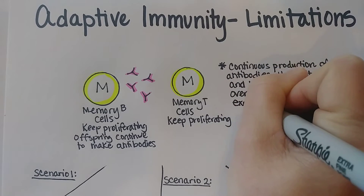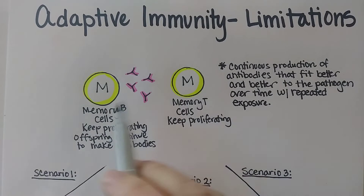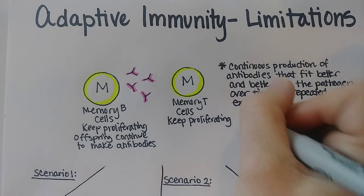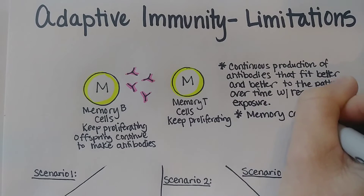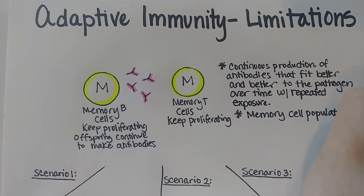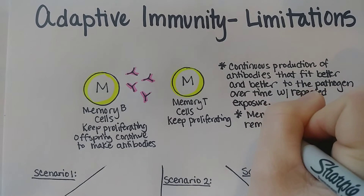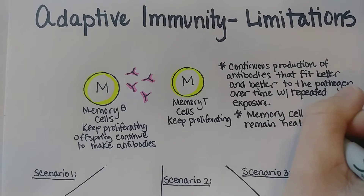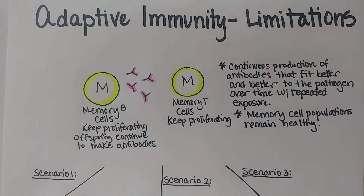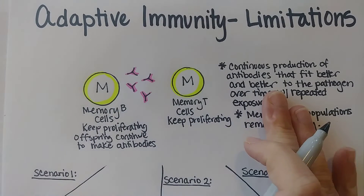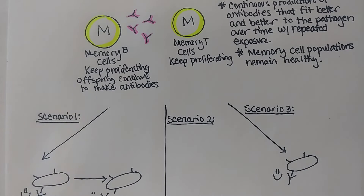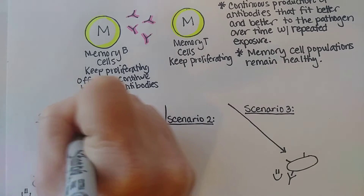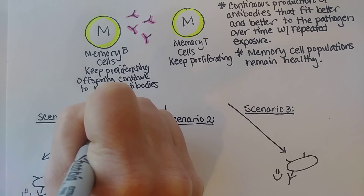Repeated exposure stimulates further production of memory cells so these populations stay nice and healthy, and the memory cell populations will remain healthy. Now I'm going to give you three scenarios where things don't work exactly like they should to keep you immune for the rest of your life. Scenario one is a process called antigenic variation that allows pathogens to hide from our immune system.